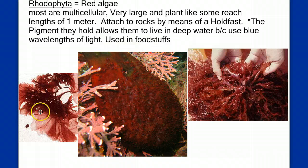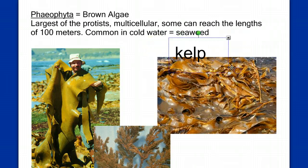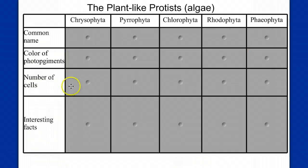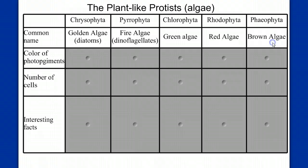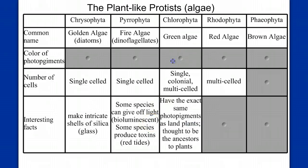Some red algaes are also used in foodstuffs to help make certain foods. And finally, the brown algae — the phaeophyta — are the largest of the protists. They're very obviously multicellular; some can reach lengths as long as 100 meters. They're common in cold seawater, and a common example is kelp. So we've moved from very small single-celled protists to these very large plant-like protists. You can make a chart with common names, scientific names, number of cells, and interesting facts as a good review.